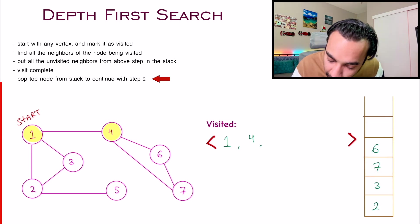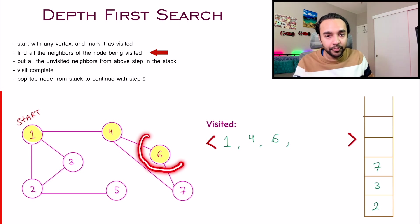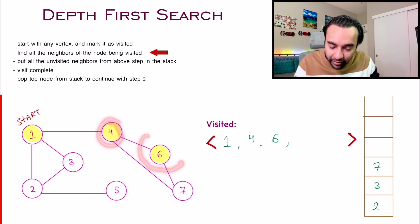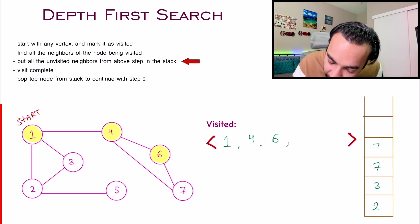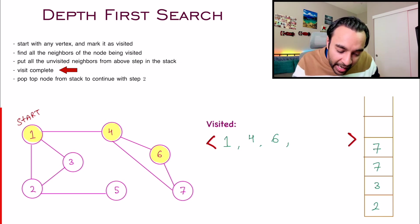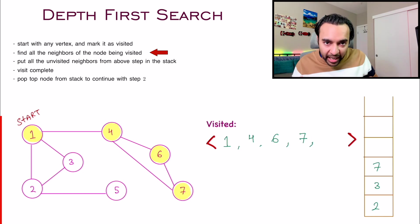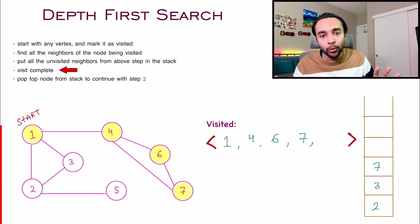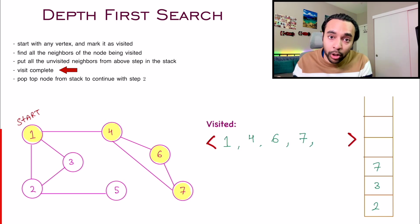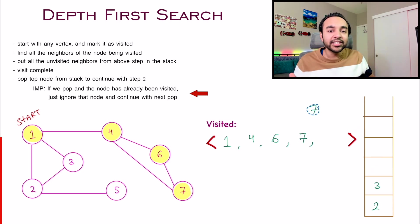Follow the same approach again — pop an element from the stack. This time you are visiting node number six. Its neighbors are node four and node seven. You have already visited node four, so do not add it. You have not visited node seven, so add it again to your stack. Next, pop again and you are visiting node number seven. Its neighbors are six and four, both already visited, so you do not have to do anything more. Then pop seven again from the stack — already visited, so simply ignore it.